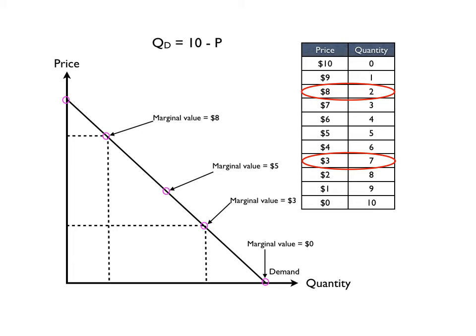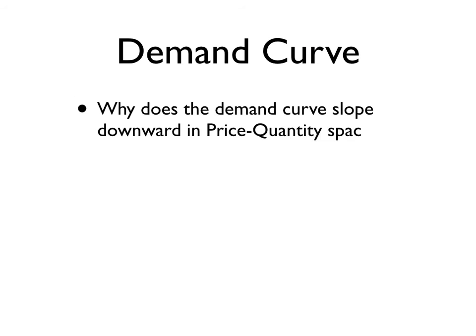We'll take a look at this later when we start talking about traffic congestion or buying food at a cafeteria where you pay one fee to come in or anything that has a zero price in the marginal value. Notice, however, that the marginal value is decreasing as we consume more units. And so what we want to look at is why does the demand curve slope downward in price quantity space?